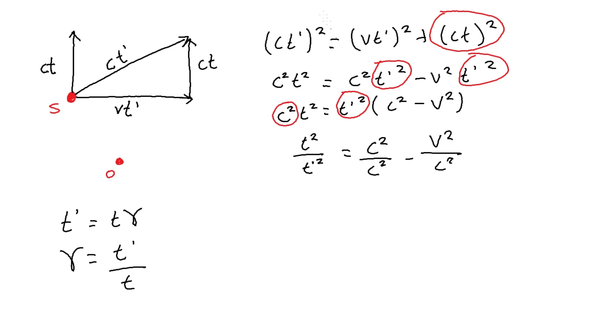Then we take the square root of everything to give us T over T prime equals the square root of 1 minus V squared over C squared.